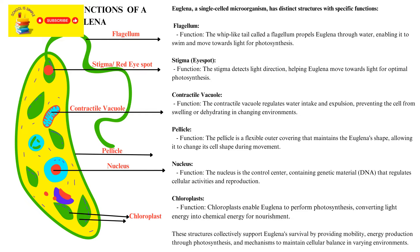Contractile vacuole: the contractile vacuole regulates water intake and expulsion, preventing the cell from swelling or dehydrating in changing environments. Pellicle: the pellicle is a flexible outer covering that maintains Euglena's shape, allowing it to change its cell shape during movement. Nucleus: the nucleus is the control centre containing genetic material — DNA — that regulates cellular activities and reproduction.